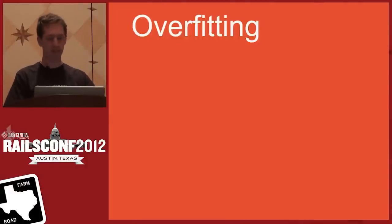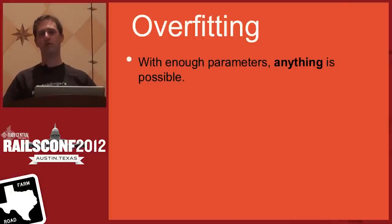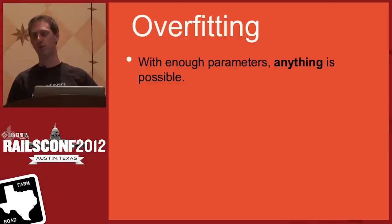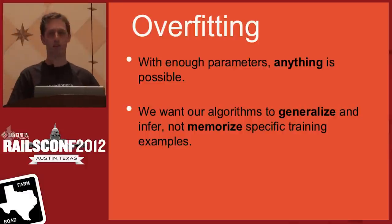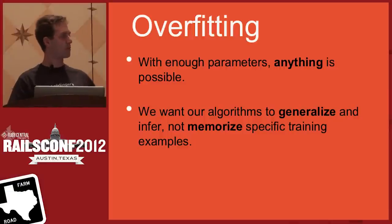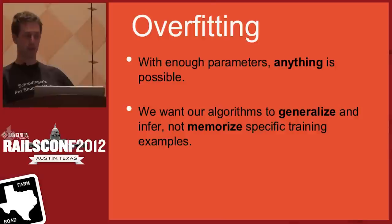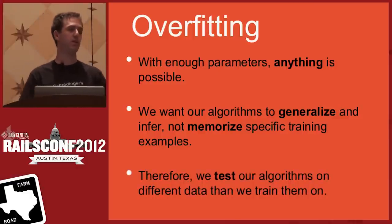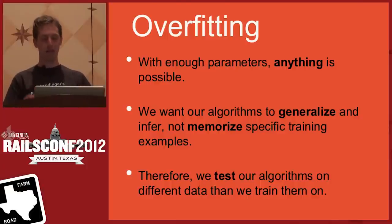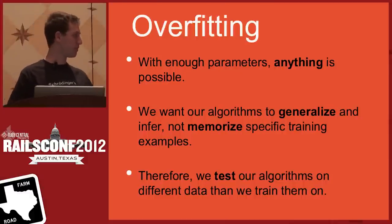The other thing I want to talk about is overfitting. The basic problem is that with enough parameters, anything's possible. Parameters are the dimensionalities of your algorithm — with neural nets it's the number of hidden nodes; with SVMs it's the number of support vectors. It's basically about how much memory you give your algorithm. You don't want your algorithm to memorize the data — you want it to generalize interesting characteristics of that data. There's a trade-off between giving your algorithm enough parameters to learn what you want without giving it so many that it just memorizes everything. To avoid this, we test on different data than we train on.